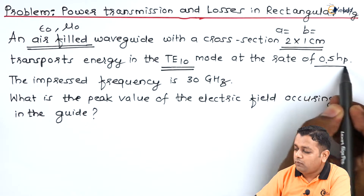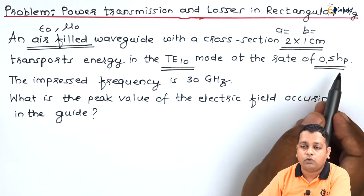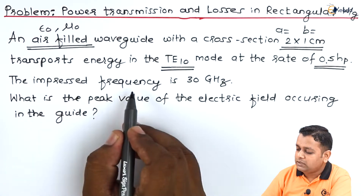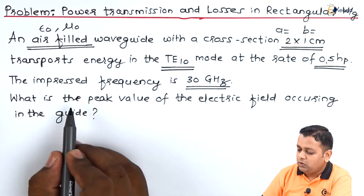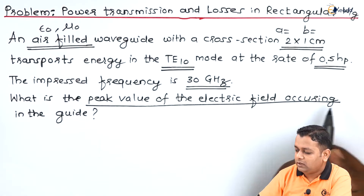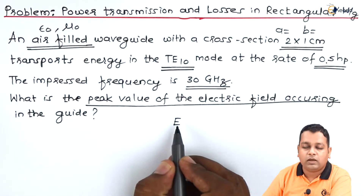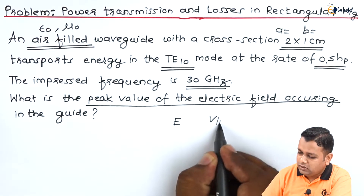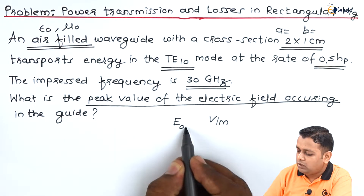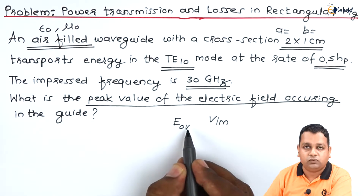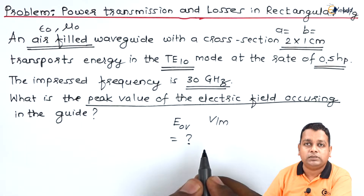The rate of power transmission is 0.5 horsepower — half horsepower. The impressed frequency is 30 gigahertz. We are asked to calculate the peak value of the electric field occurring inside the guide, denoted capital E, measured in volts per meter. The peak value is denoted capital E subscript 0Y in volts per meter, and that is what we need to find.